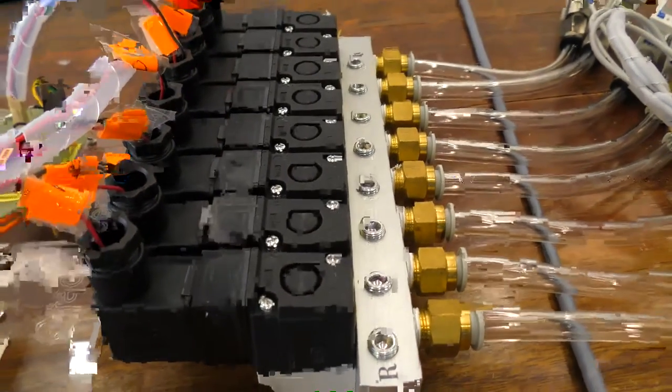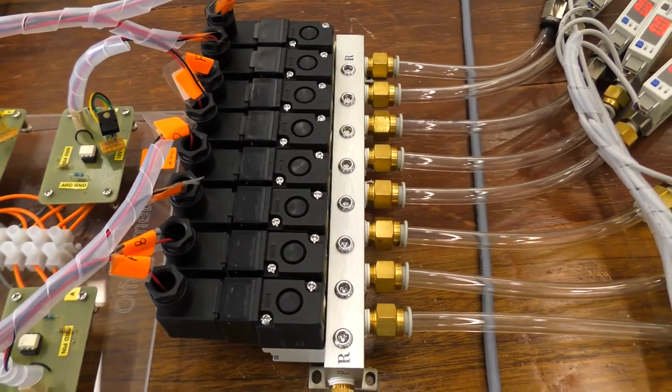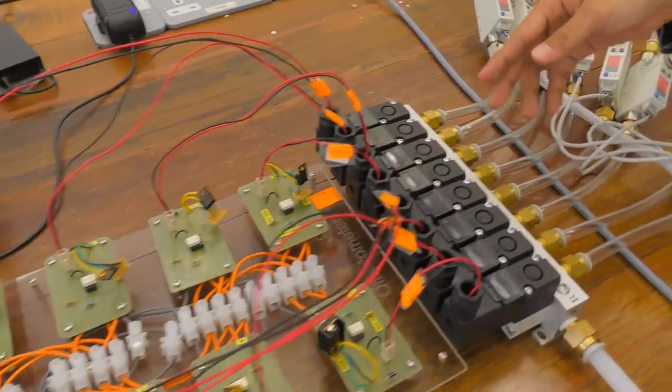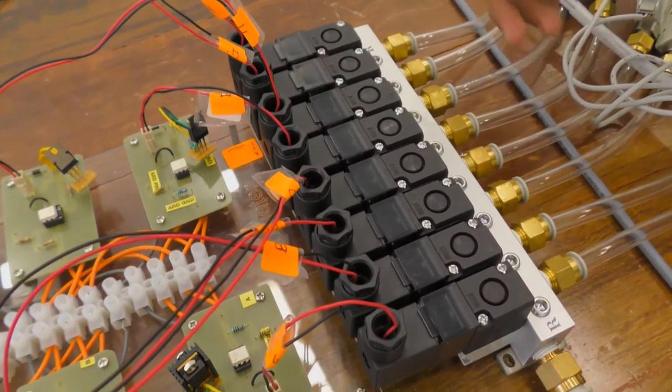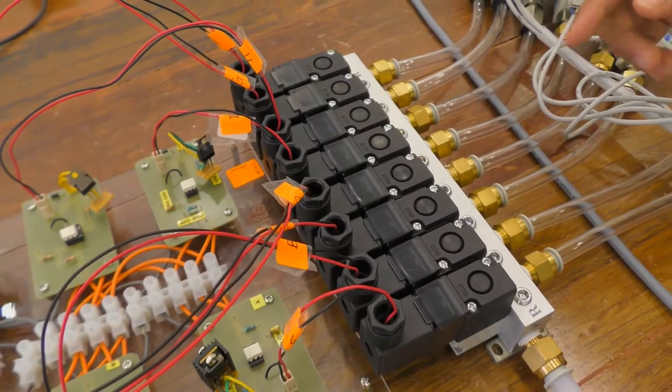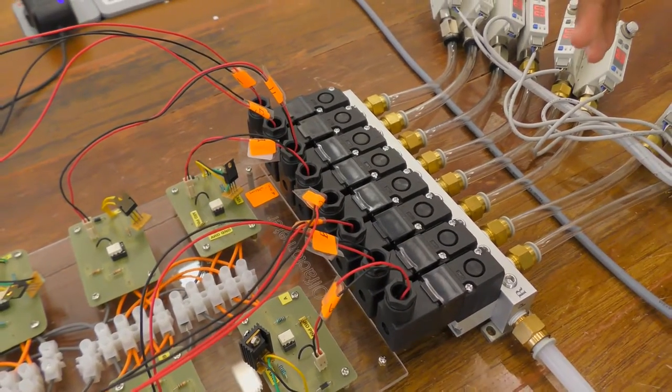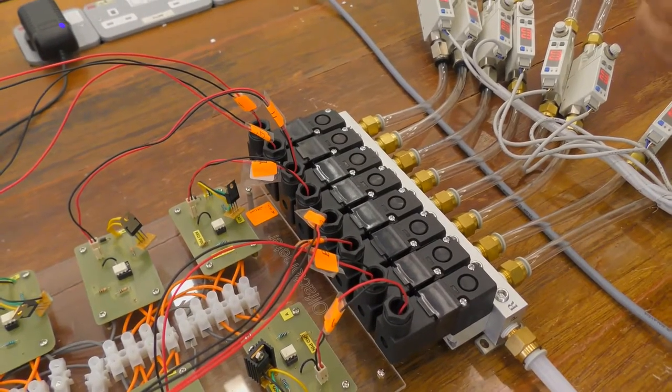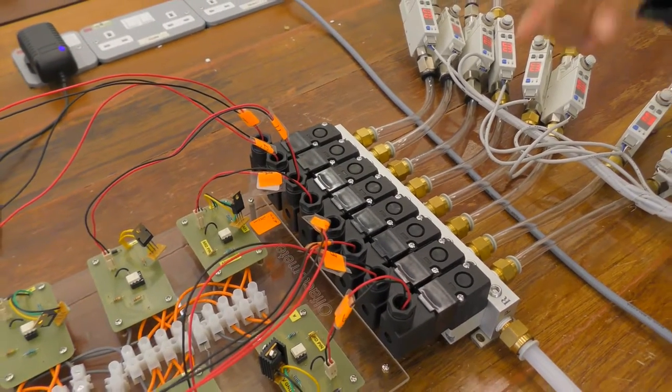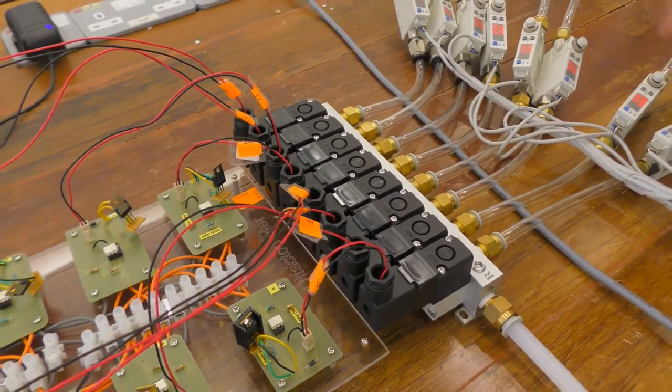After that, the air will go to the solenoid and manifold. Solenoid is a valve which contains eight valves which are connected to the circuit which is controlled by the Arduino program. From the Arduino program, it will make sure that the circuit is switched on or off according to the system programming.